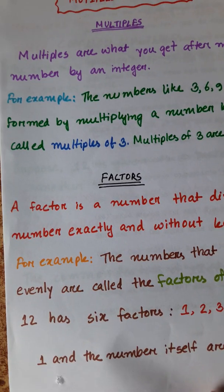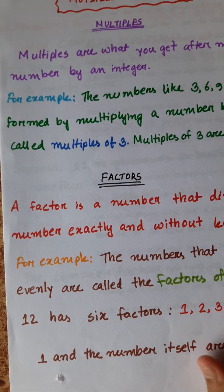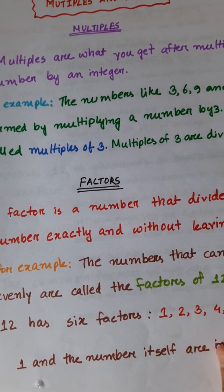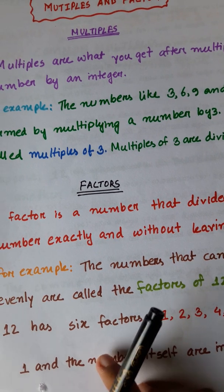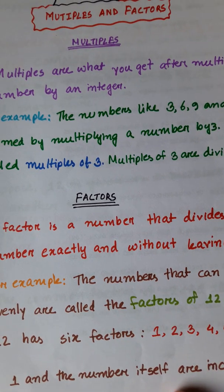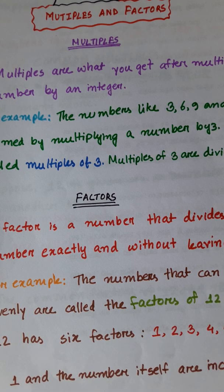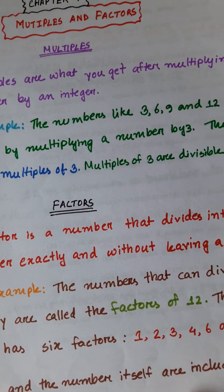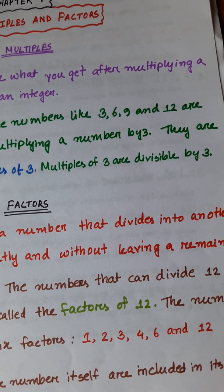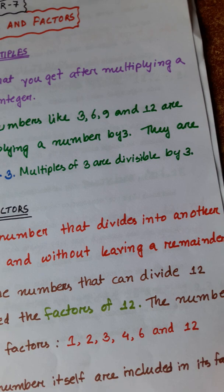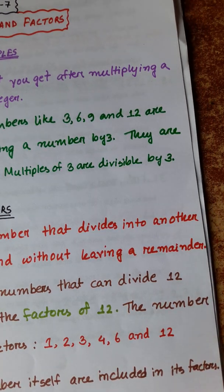Factors. A factor is the number that divides into another number exactly and without leaving a remainder. That means, it is the number that can divide another number completely.